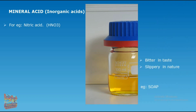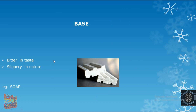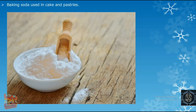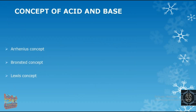The next category is base. Base is bitter in taste and slippery in nature. The soap we use every day for washing is a base. Another example is baking soda, used in cakes and pastries. To study the concept of acid and base, three theories were given: the Arrhenius concept, the Bronsted-Lowry concept, and the Lewis concept.